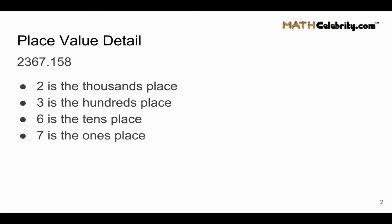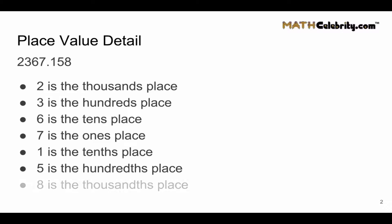1 is the tenths place, 5 is the hundredths place, and 8 is the thousandths place. Now let's take this one step further and visualize the place values to build the multiplier to show you how this number is constructed.